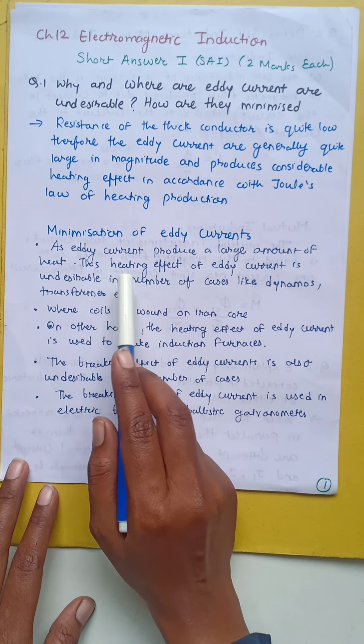In a number of cases like dynamo, transformer, etc., where the coil is wound on an iron core, the heating effect of eddy current is used to make an induction furnace.